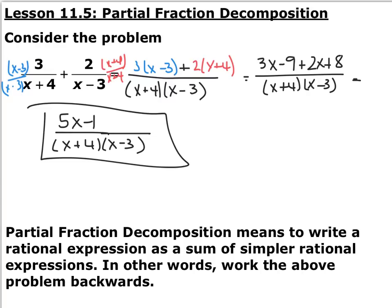In order to simplify this, you need a common denominator. Multiply the two denominators together to get x plus 4 times x minus 3. The first fraction needs the x minus 3, so multiplying that to the numerator and denominator gives 3 times x minus 3. The second fraction needs the x plus 4, giving 2 times x plus 4. Simplifying gives 5x minus 1 over x plus 4 times x minus 3.